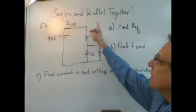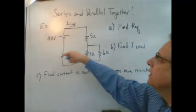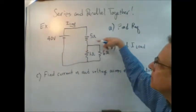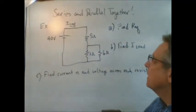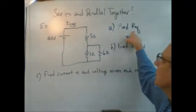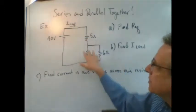So we have, as an example, a 40-volt battery that's driving these three resistors: five, three, and six ohms. And the first thing we have to do is find the equivalent resistance of these three resistors.